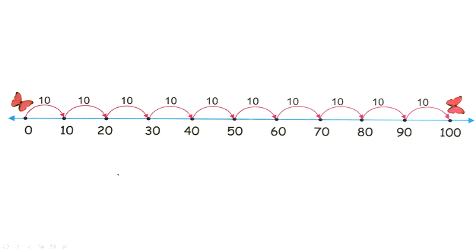Take your pointer finger and start at zero. Count how many times you go through a loop to get to 10. I only jumped one loop to get to 10, so that means 10 times one equals 10. Let's see how many hops to get to 50 — start at zero and hop all the way. One hop, two hops, three hops, four hops, five hops. It took five hops of 10 to get to 50, or 10 times five equals 50.